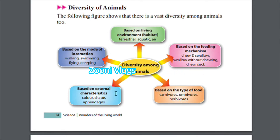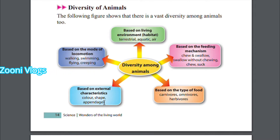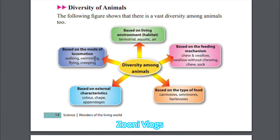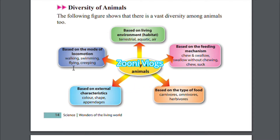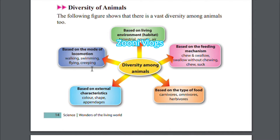Animals can also be categorized based on external characteristics such as color, shape, and appendages, and based on the mode of locomotion: walking like us, swimming like fish, flying like birds, and creeping like reptiles.